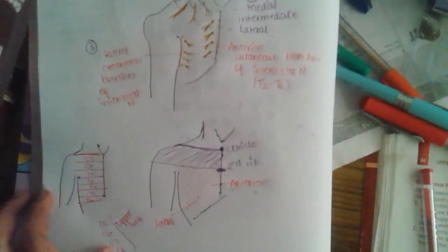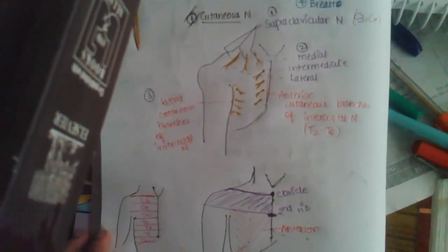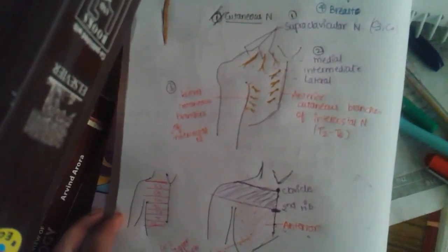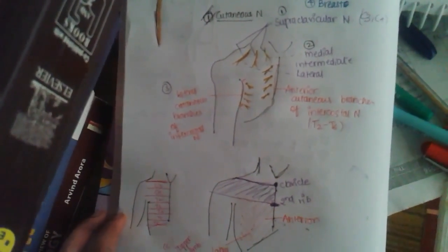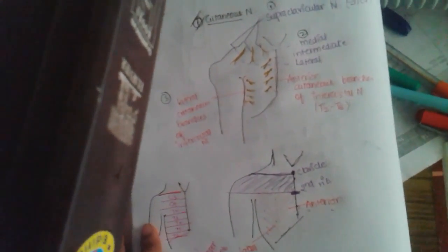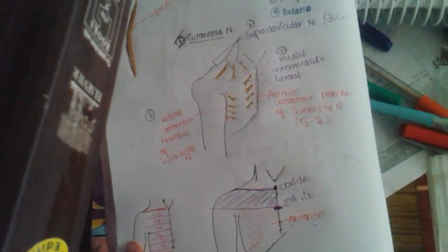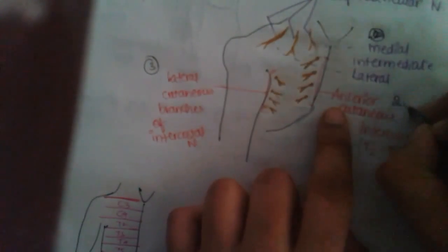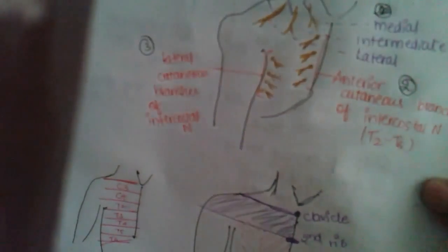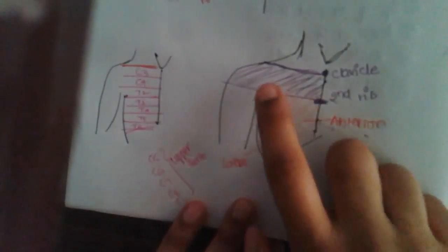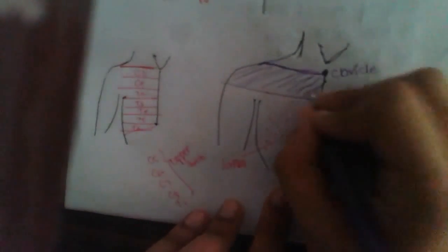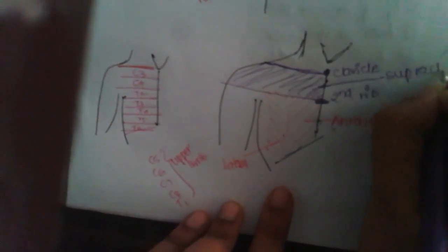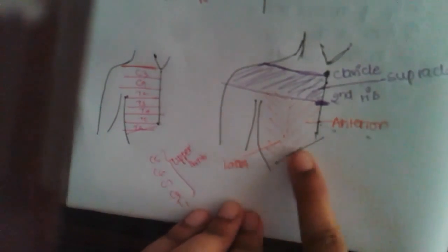To summarize the cutaneous nerves of the pectoral region: there are mainly three types. First, supraclavicular nerves divided into medial, intermediate, and lateral types. Second, the anterior cutaneous branches of the intercostal nerves (T2–T6). Third, the lateral cutaneous branches of the intercostal nerves. The blue part of the dermatomal diagram is supplied by the supraclavicular nerves, and the rest by the anterior and lateral cutaneous branches of the intercostal nerves.